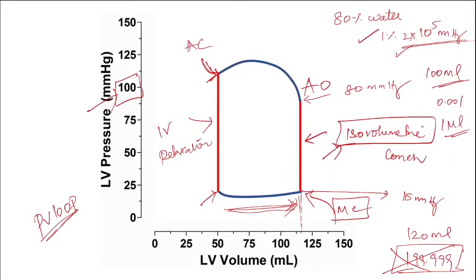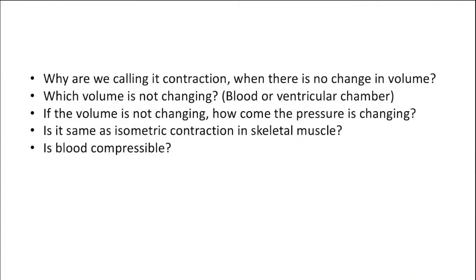Even that small change in volume brings a huge amount of pressure increase — from about 15 to 80 mmHg — achieved by a tiny decrease in volume through compressive forces. So to answer the doubt: why call it contraction when there is no change in volume? The simple English meaning of contraction is a decrease in size, but in physiology we use it for both force production and decrease in muscle size. Here there is force production, so it is still called contraction.